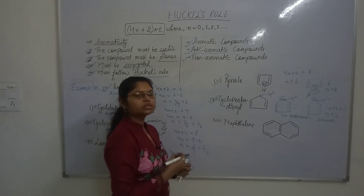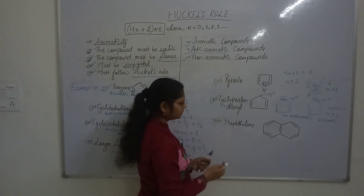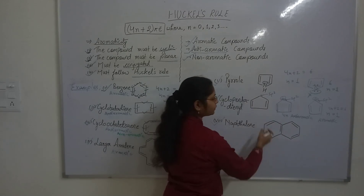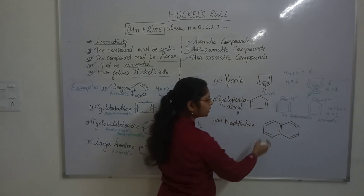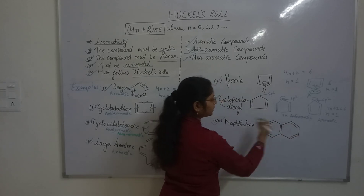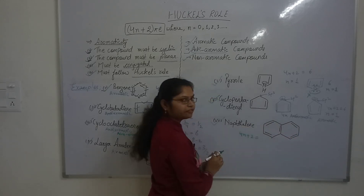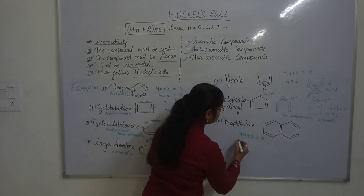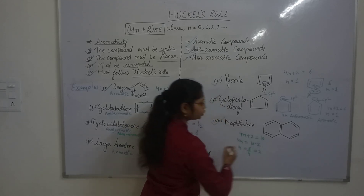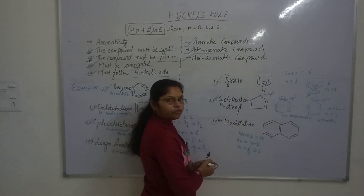However, some fused rings also follow Hückel's rule — for example, naphthalene. For fused rings, we consider the part of the ring in which conjugation exists. In naphthalene, conjugation exists all over the ring. It is cyclic, planar with all carbons sp2 hybridized, and fully conjugated. Checking Hückel's rule: there are 5 pi bonds giving 10 pi electrons. For (4n + 2) = 10, n = 2, which is a positive integer, so naphthalene is also aromatic.